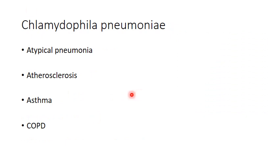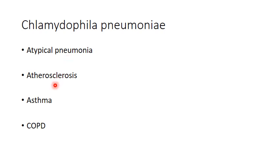The next organism is Chlamydophila pneumoniae, which is known to cause atypical pneumonia, which we will deal with later in detail, as well as atherosclerosis, asthma and COPD.